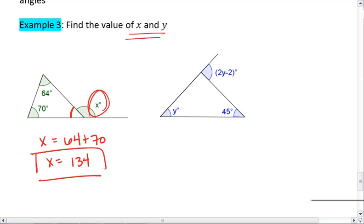Let's look at the blue triangle now. In this case, our exterior angle is 2y minus 2. The adjacent interior would be this angle that I just arced in red. So 2y minus 2 must equal the sum of the other two angles, which is y plus 45. I can subtract y from both sides, giving me y minus 2 equals 45. If I add 2 to both sides, I now get y equals 47.